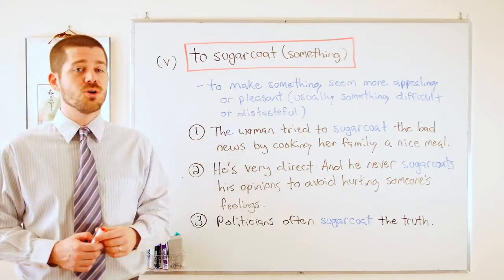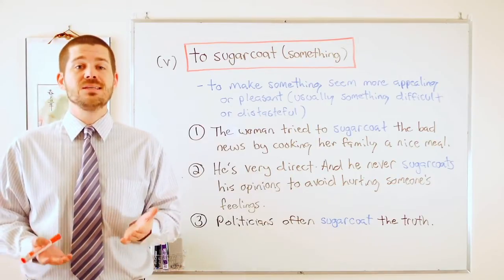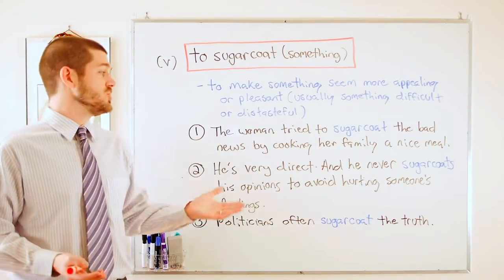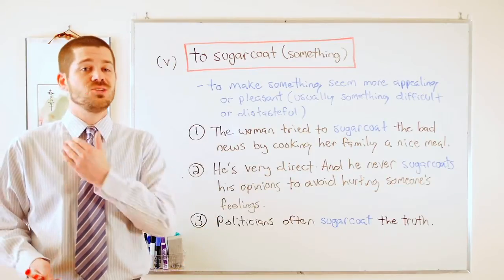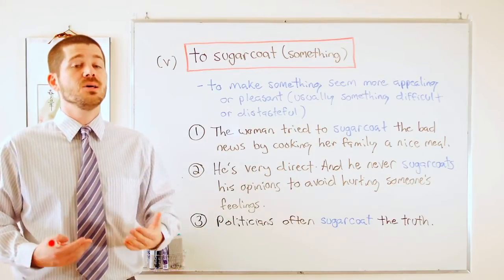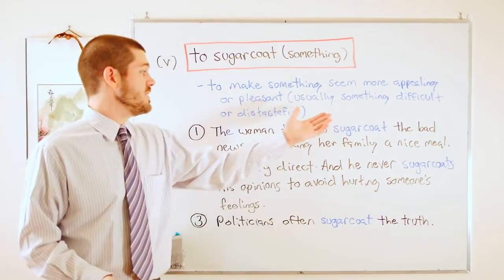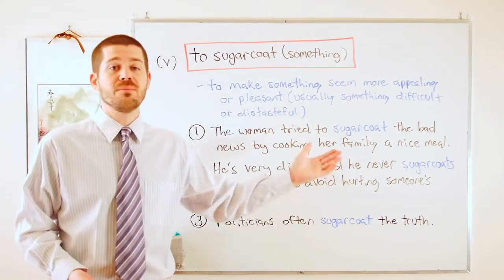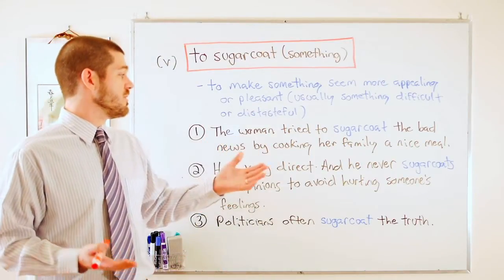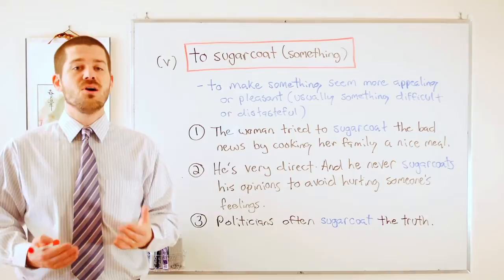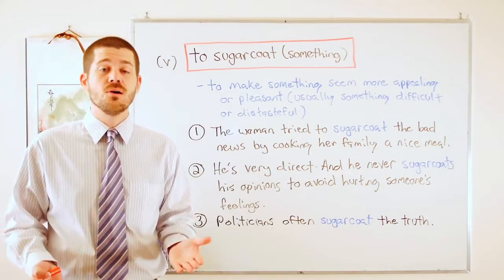Looking at the first example: the woman tried to sugarcoat the bad news by cooking her family a nice meal. Imagine she's got really bad news — maybe she lost her job, she's been fired. To make this difficult news easier for her family to hear, she's going to cook their favorite meal so it's not as painful when she tells them.